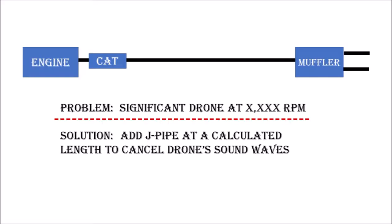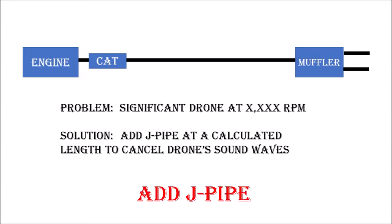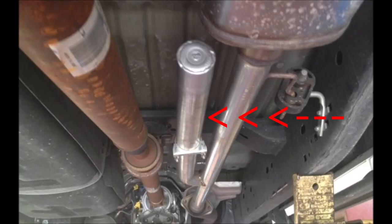If you have a drone problem in your vehicle and it's not an exhaust hanger — you know it's because you put on a new exhaust, took out your cats, or whatever you may have done — that drone is driving you crazy. The best way to fix it is to add a J pipe. As you can see in this photo, a J pipe is a pipe added off to the side of your main exhaust. If you have a single exhaust you have one; if you have a dual exhaust you'll need two. That J pipe is calculated to a specific length to cancel out sound waves.